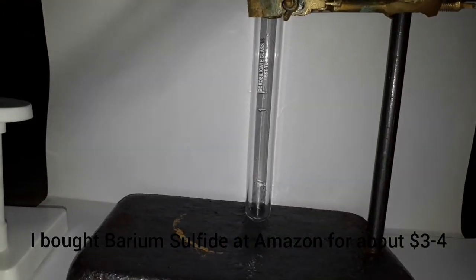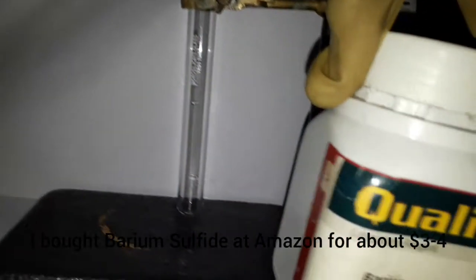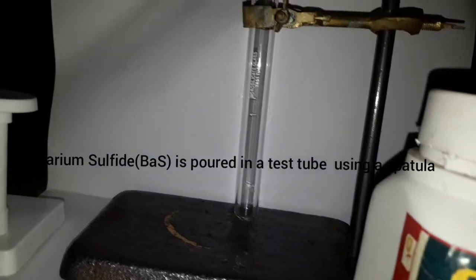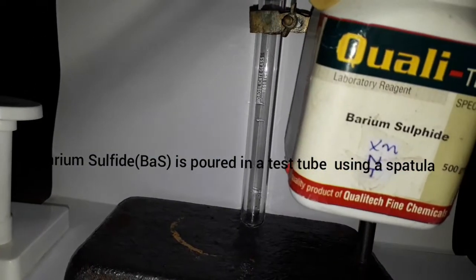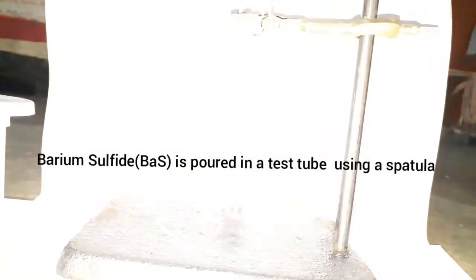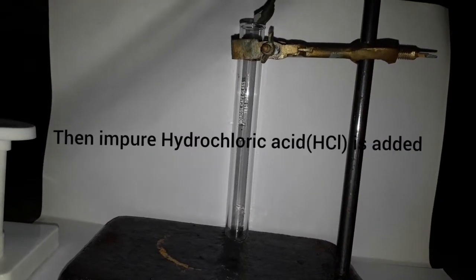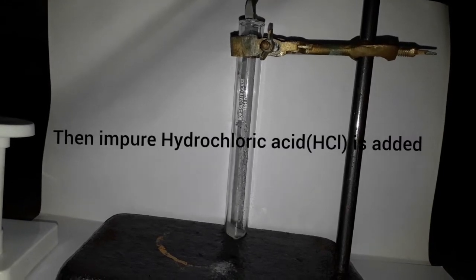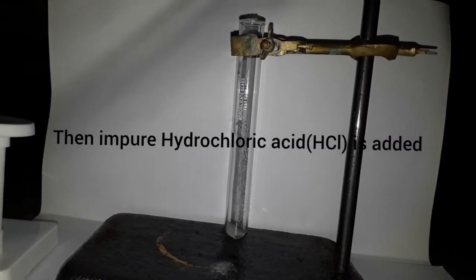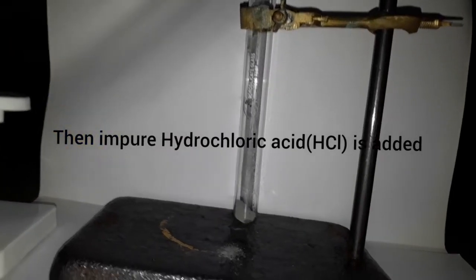A test tube. First, I have barium sulfide, which I bought online from Amazon for about three to four dollars. I'm putting this into the test tube with a spatula. You can see the barium sulfide—it's a black salt.